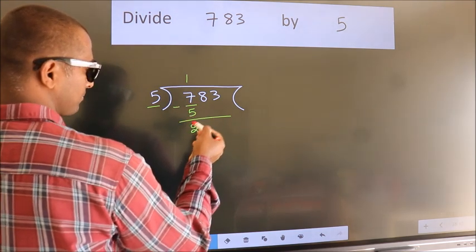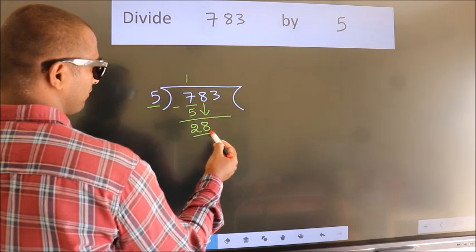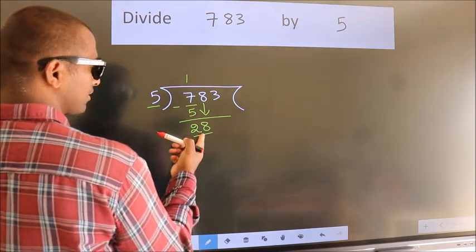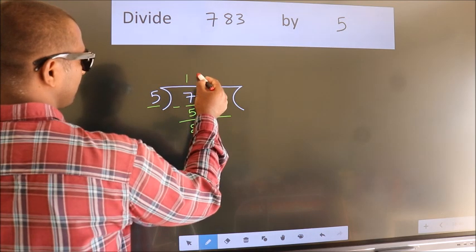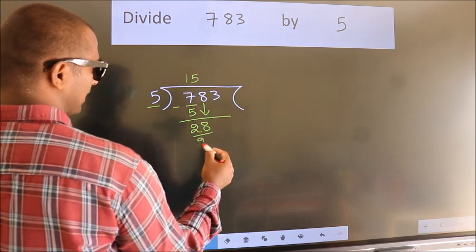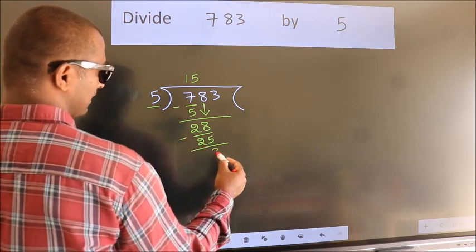After this, bring down the beside number. So 8 down. So 28. A number close to 28 in the 5 table is 5 fives 25. Now we subtract. We get 3.